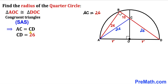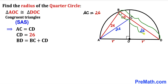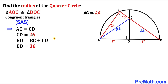Now we can see that the whole side length BD is the sum of the two individual side lengths BC and CD. Therefore, BD = 10 + 26 = 36 units.